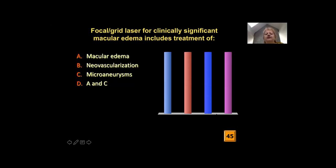Focal grid laser treatment for clinically significant macular edema includes the treatment of: A — macular edema, B — neovascularization, C — microaneurysms, or D — A and C together. People were a bit unsure about that. By the end we were clear — 100% said A and C.